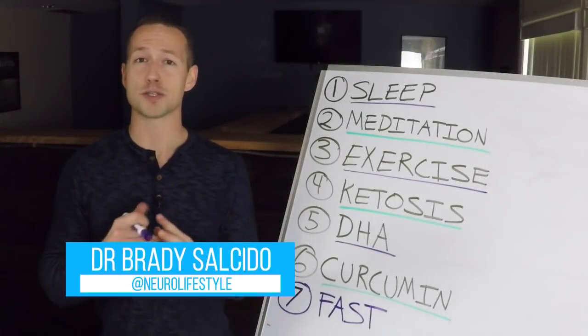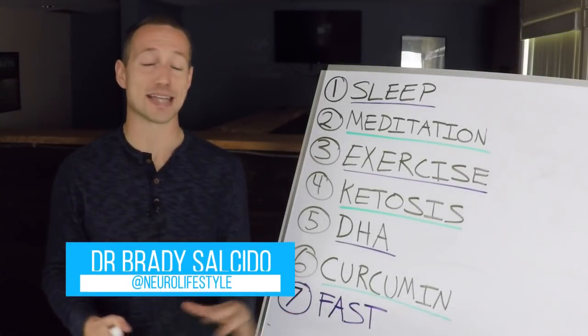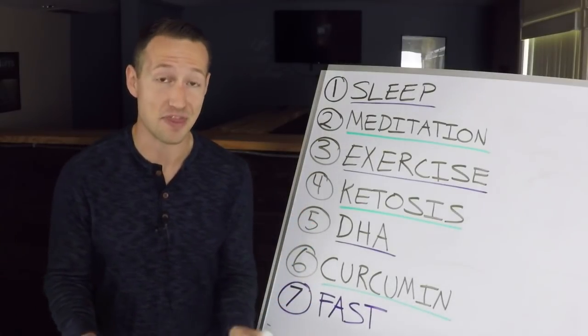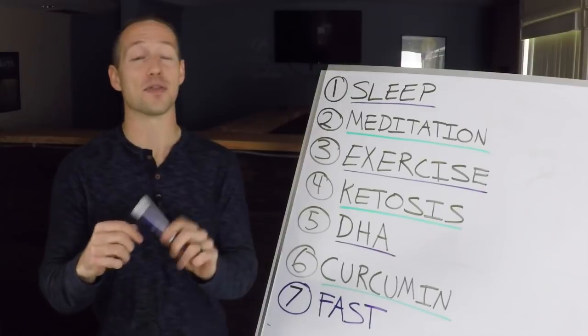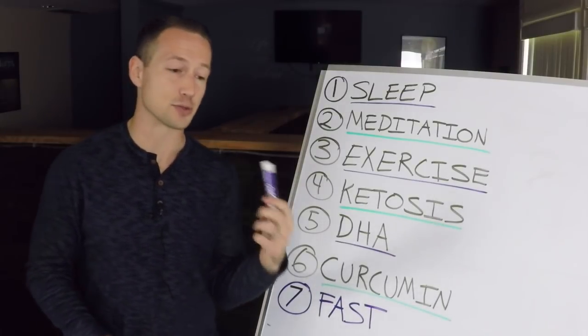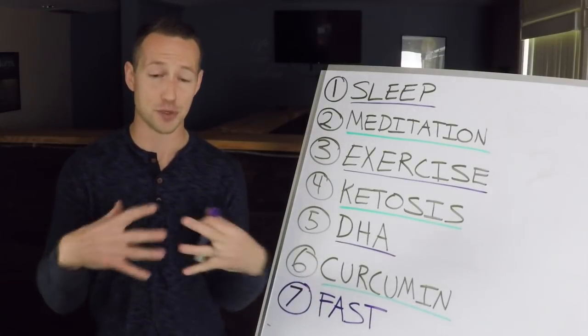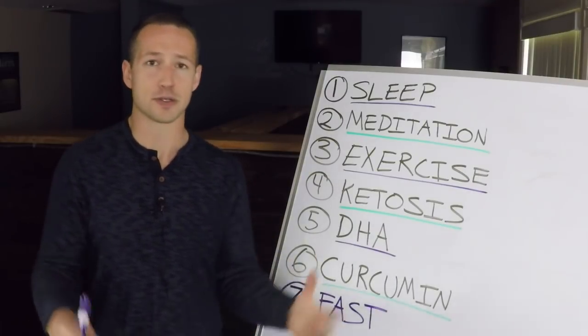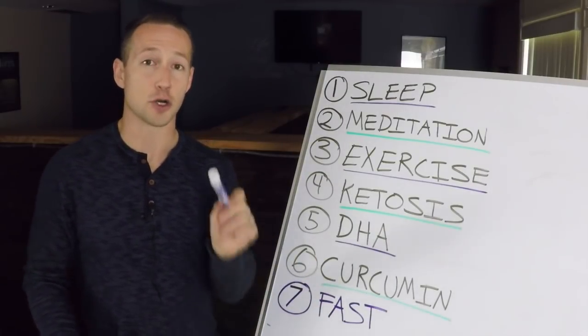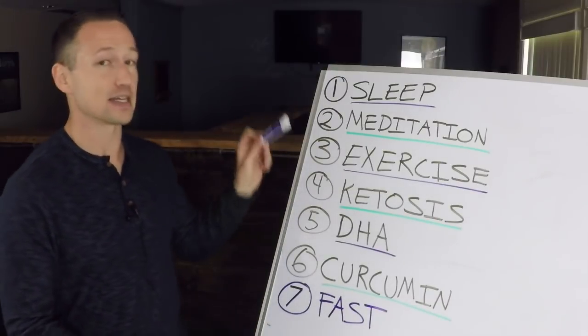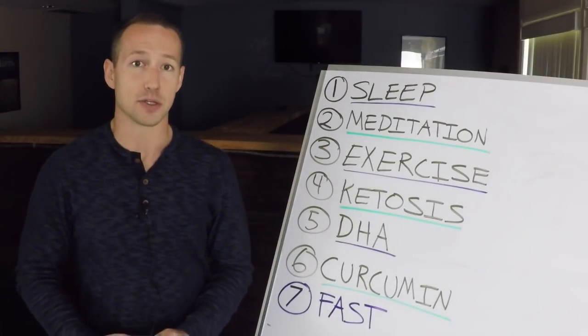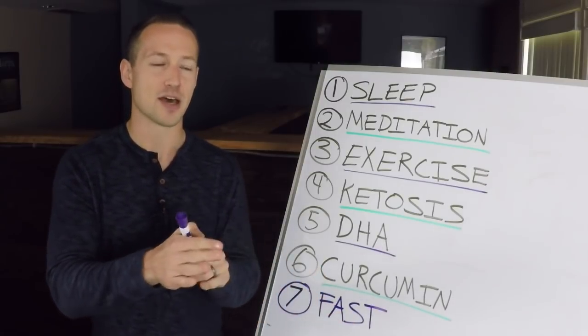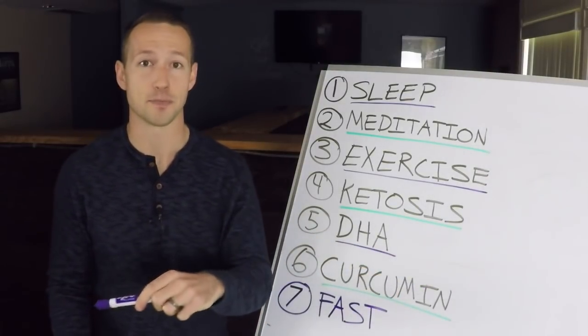For a long time it was thought that once your brain hit its early 20s it stopped developing. That was it and you were stuck with the hardware that you got. But thankfully, thanks to science, we know that's not true. Your brain continues to grow, adapt, and change and actually rewire itself based on the things that you're learning, the things that you're doing, the new experiences that you're having. And your neuroplasticity is highly affected by how you choose to live your life, which can make those new habits and strategies and those things you're trying to implement in your life much more challenging or so much easier.